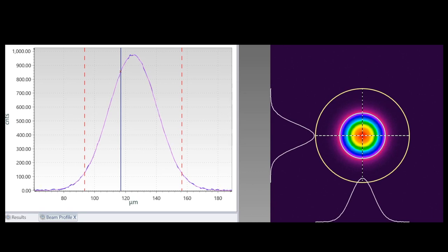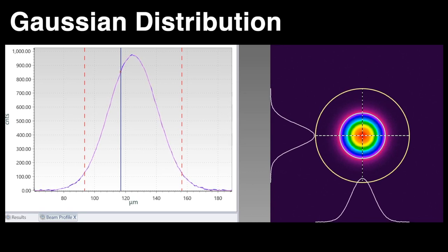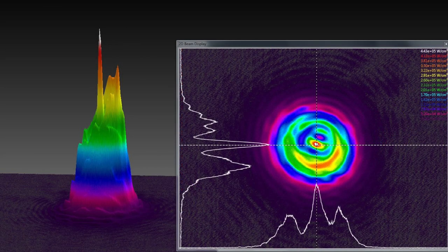This symmetrical bell-shaped pattern is called a Gaussian distribution. Some lasers present a much less ordered profile with hot and cold spots that are asymmetrical in location.